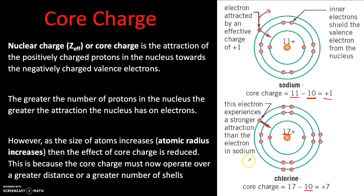We also see this in real life. Chlorine is very keen to go out and find an electron in order to fill its valence shell so that it has eight electrons. And because this core charge — this nuclear attractive force — is able to hold on to these outer electrons quite strongly, it's not keen to get rid of any of its electrons. It's much more likely to find an electron from somewhere in order to complete its outer shell and become more stable.